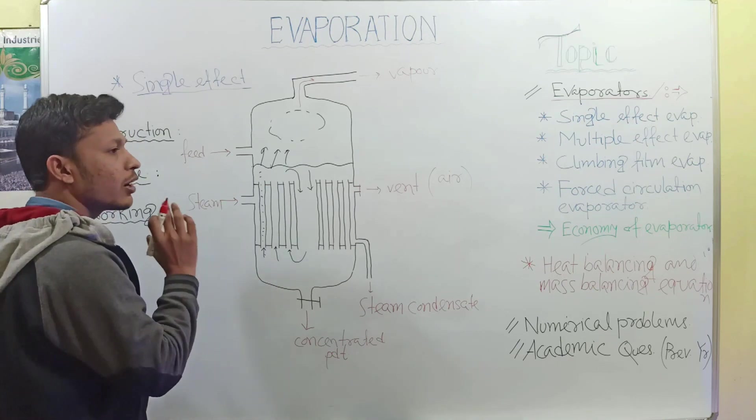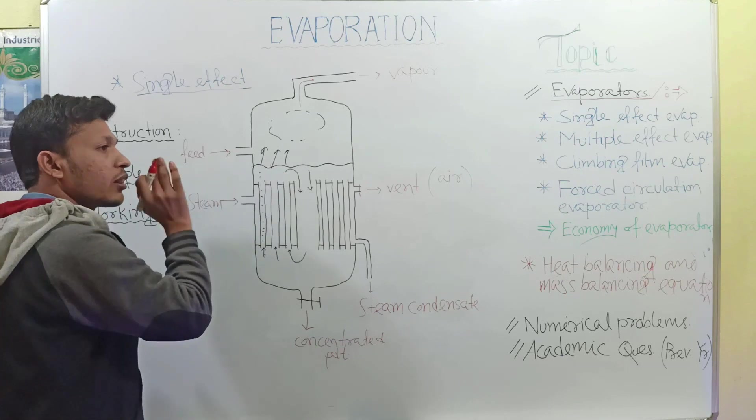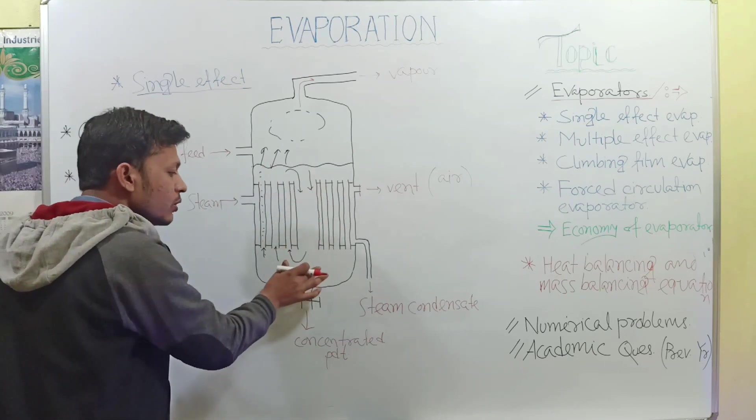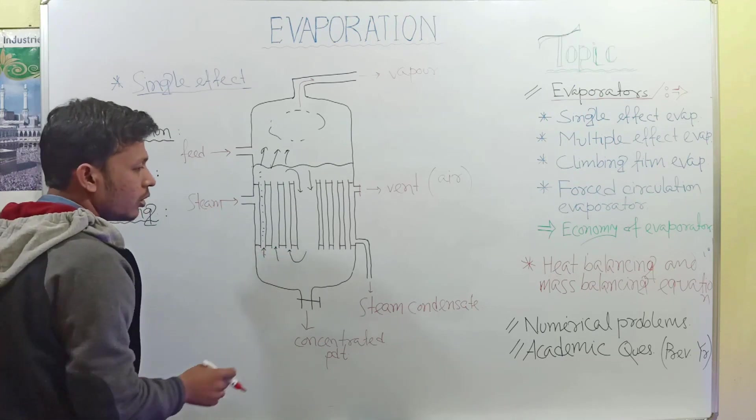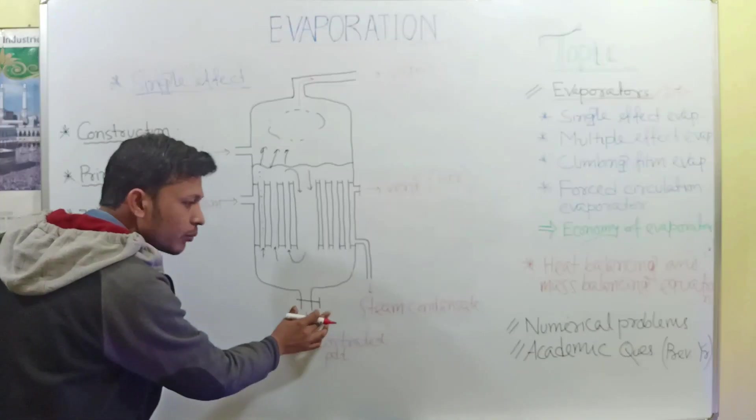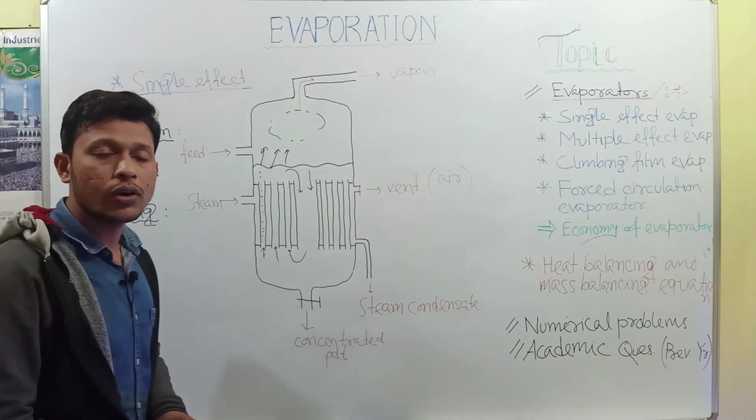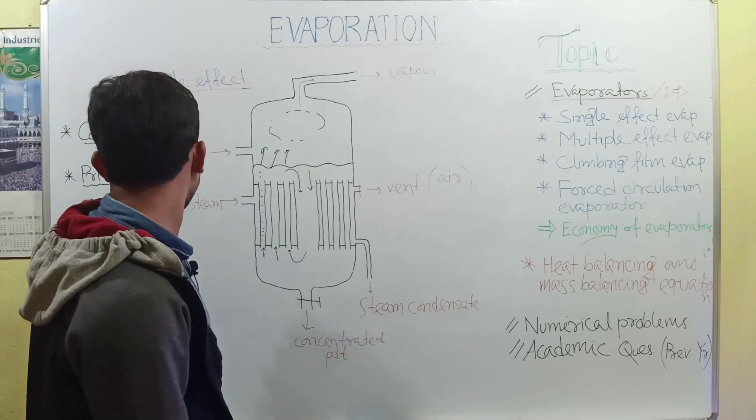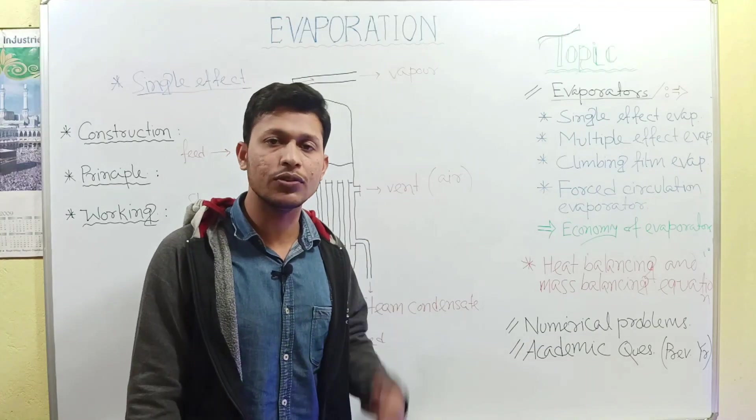After forming desired concentrated product, you have to maintain this liquid level. When the whole feed in the evaporator becomes desired concentrated, it is collected through the collecting path as concentrated product. I hope you easily understand the construction, principle, and working. Now see what is the use of this.